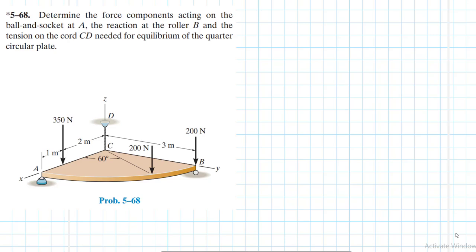Hello, I welcome you all to this another interesting screencast. It reads that determine the force components acting on the ball and socket at A, the reaction at the roller B, and the tension on the cord CD needed for equilibrium of the quarter circular plate. This problem is coming from the Engineering Mechanics Statics textbook, the Tenth Edition by Hibbeler.